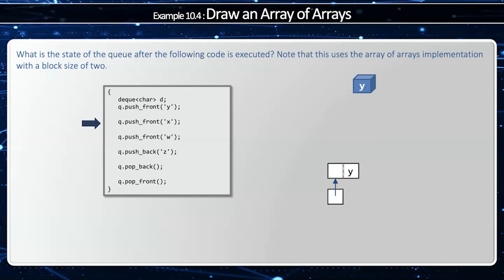When I push front x, well, no problem, because there's space in front of the y, so no problem. When I push front w, something really complicated is going to happen here. Now, since my deque is full, I have to allocate a new array of pointers, which means I have to bring down x and y, and so that means block 1 will be empty, but block 0 will have x and y.